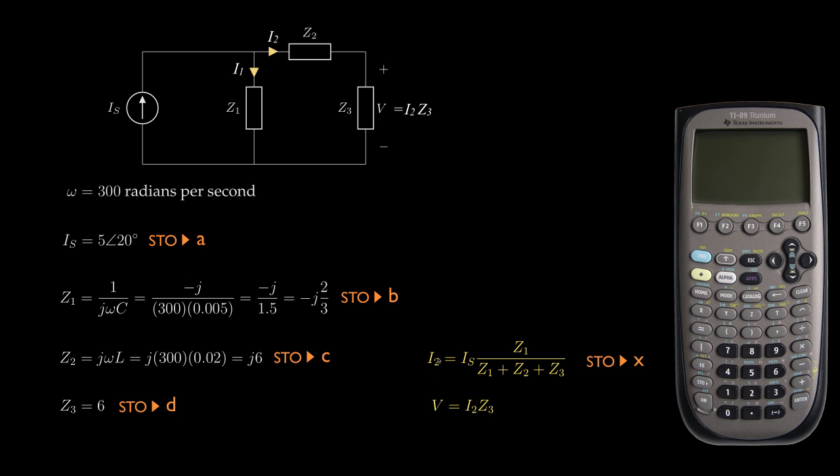When I compute the phasor current I2, I'll store that in the variable X. And then the desired voltage, when I finally compute that, I'll store it in Y.